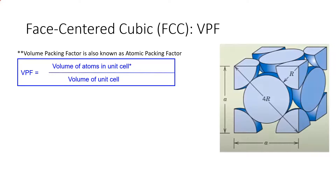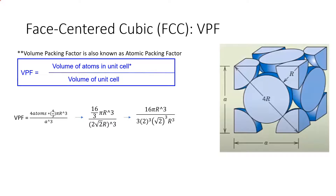To calculate the atomic packing factor for FCC, we plug everything in. The volume packing factor equals four atoms times (4/3)πr³ over a³. Substituting a = 2√2·r and simplifying, we get approximately 0.74, meaning atoms occupy about 74% of the total available volume within the unit cell.